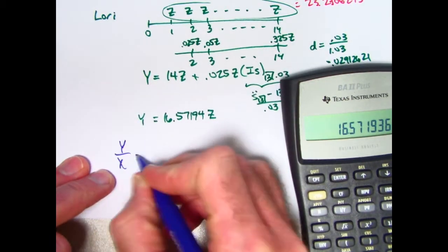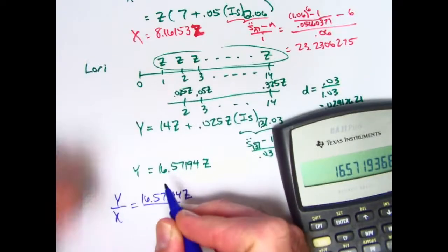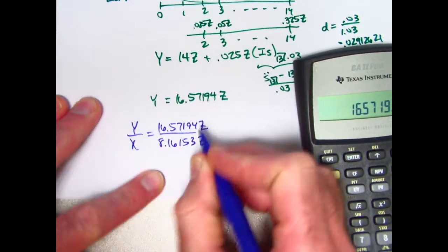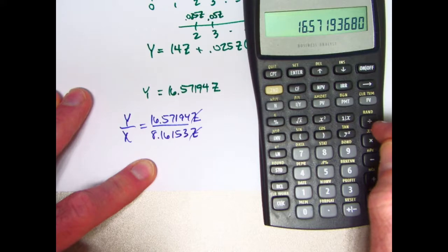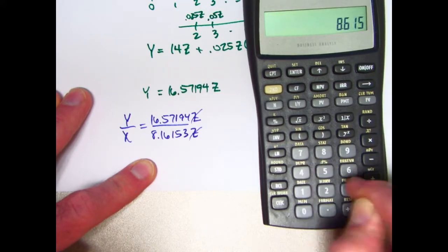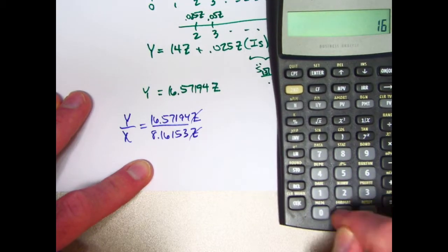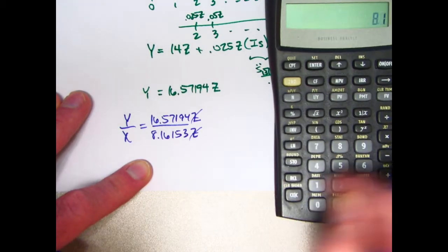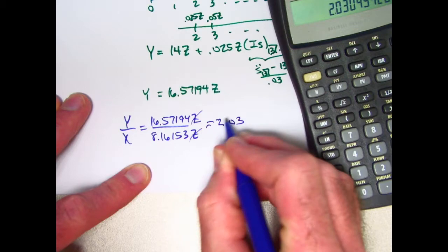Now we can calculate the ratio. Y divided by X: 16.57194Z divided by 8.16153Z. The Z's will cancel. So in the end, I just divide those numbers: 16.57194 divided by 8.16153. That's about 2.03, and that is the answer for this ratio Y divided by X.